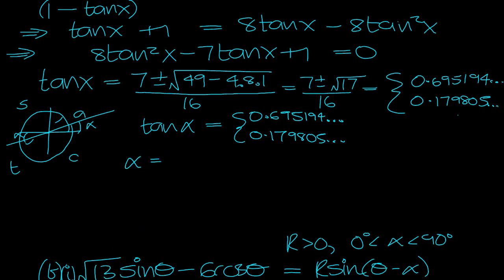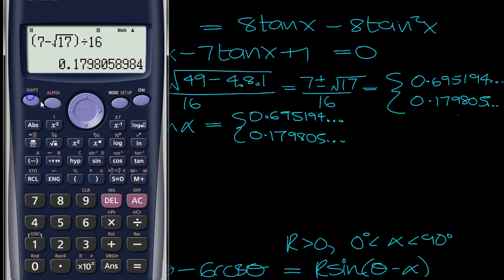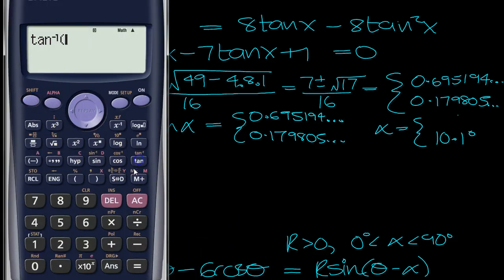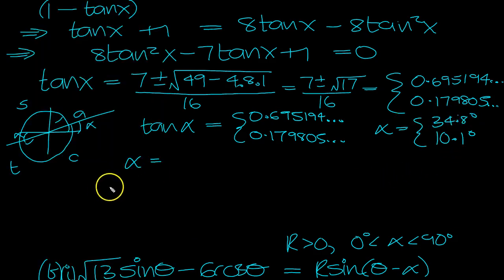So alpha then is equal to, let's go back to this and then we do shift tan answer. We want to be in degrees mode. 10.08, so that was alpha is 10.08. And then shift tan 0.6951, 34.8, that should be accurate enough. 34.8, so there's alpha.